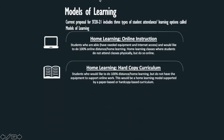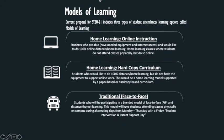The first thing we're going to look at is the three models of learning that we have for this school year. We have home learning online instruction, home learning hard copy curriculum, and we also have the traditional face-to-face. Please note that these are the three options that are afforded to our families, and we'll be working with these three modalities as we go through the module.